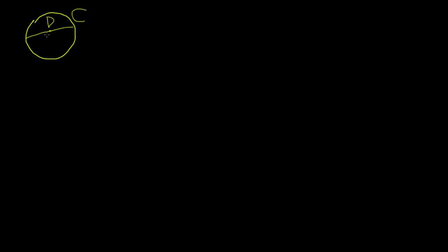Let's have a circle. The circumference of a circle, the diameter of a circle, and the radius of a circle. The definition of pi is the ratio of the circumference of a circle. Let's go to circumference of a circle over 2R, because the diameter of a circle is equal to 2R.